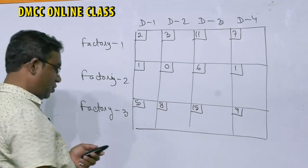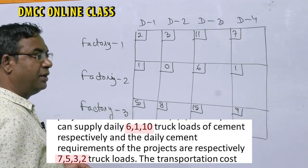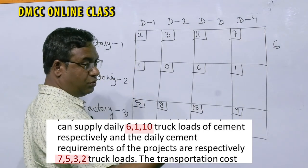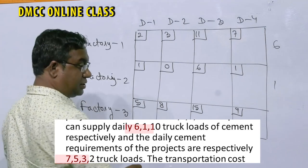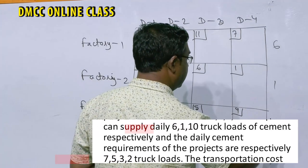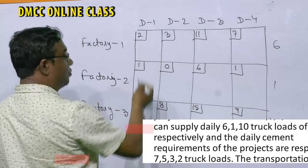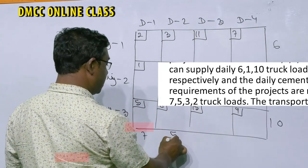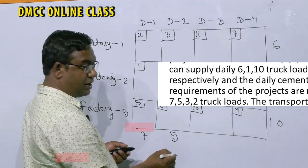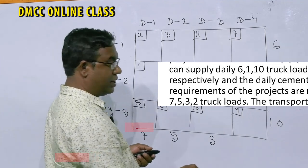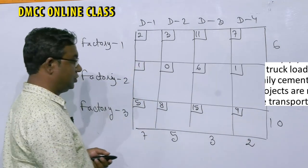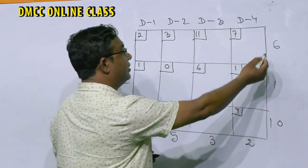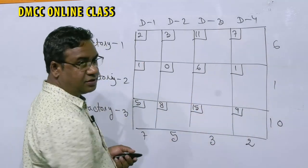Supply from source one is six truck lots, from source two is one truck lot, and from source three is ten truck lots. Demand for project one is seven, project two is five, project three is three, and project four is two truck lots. Total demand is seventeen truck lots per day and total production per day is also seventeen, so this is a balanced transportation problem.